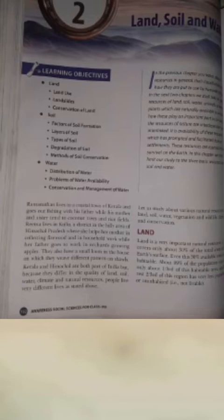In the previous chapter, we have learned about resources. We learned what are resources, the classification of resources and the conservation of resources. In the next chapter and in this chapter, we shall take specific resources of land, soil, water, animals, as well as plants.